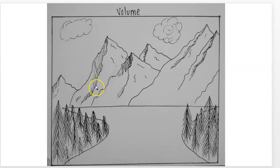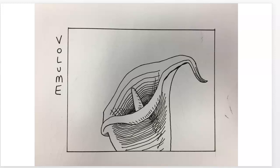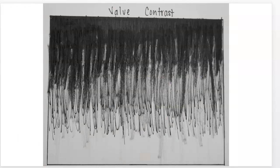Volume: one example with mountains is okay, though the lake or road breaks oddly and the trees are a bit small. A lily done with cross-contour lines works nicely for volume, though the placement could be improved with more of the stem. It definitely works well for showing volume.